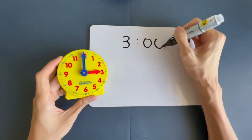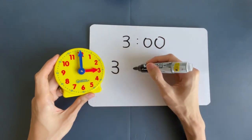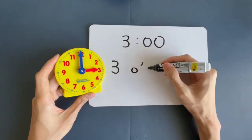3 dot 0 0. And to spell it, you write it this way. 3 o'clock.